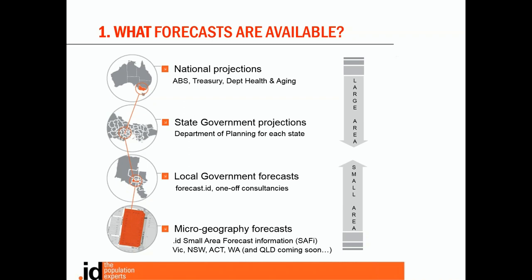The final set of forecasts available are microgeography forecasts. These are small area - something we call Small Area Forecast Information, or SAFI - a set of independent forecasts produced by ID for each state. They are designed for organisations who need more detailed forecast information than is available from the public sources listed above and they are available for all of Victoria, New South Wales, the ACT and WA with Queensland coming soon.